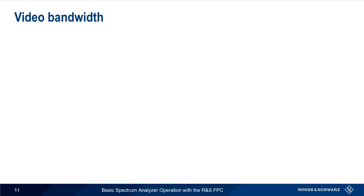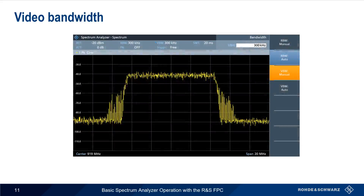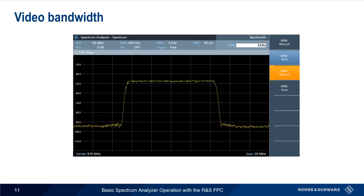Now let's talk about video bandwidth. In most cases, letting the analyzer automatically set video bandwidth works reasonably well. In the case of noisy signals, however, we can clean up the trace by lowering the video bandwidth. Remember that video bandwidth simply smooths the trace — it doesn't affect things like the noise floor or signal resolution in the same way that resolution bandwidth does.